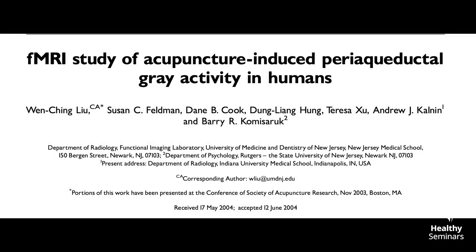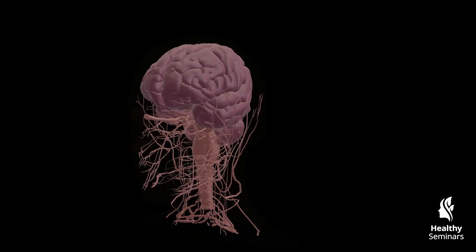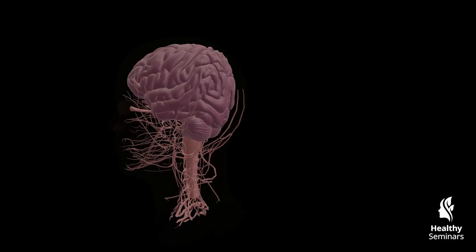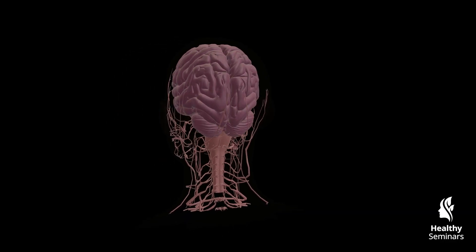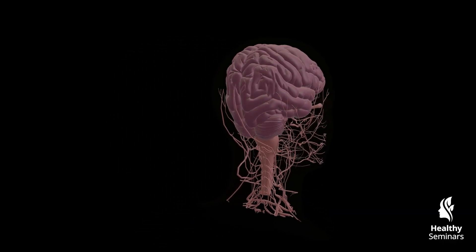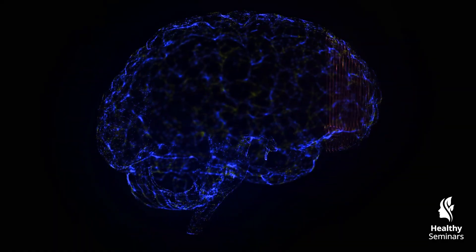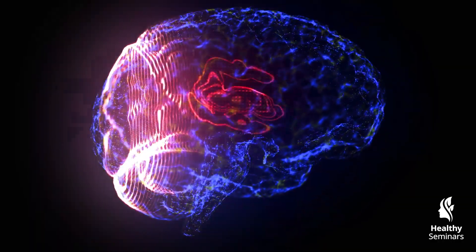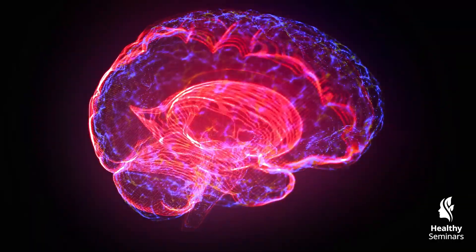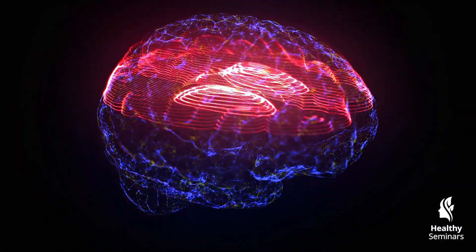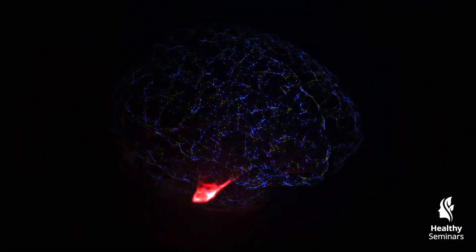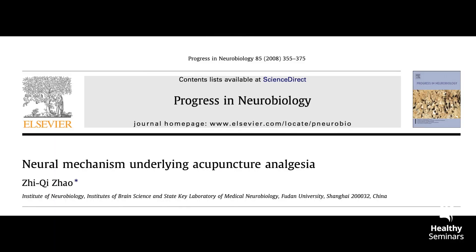One of the key effects of Qi arrival is the activation of the periaqueductal gray, a crucial brainstem structure that regulates pain through endogenous opioid release. The PAG sends inhibitory signals down the spinal cord, dampening pain perception by triggering the release of beta-endorphins, enkephalins, and dynorphins — the body's natural painkillers. This mechanism supports acupuncture's profound analgesic effects.